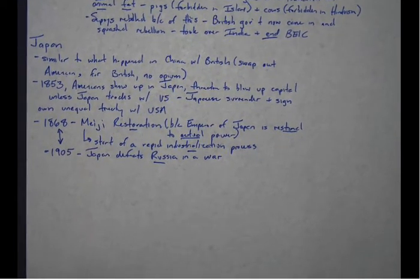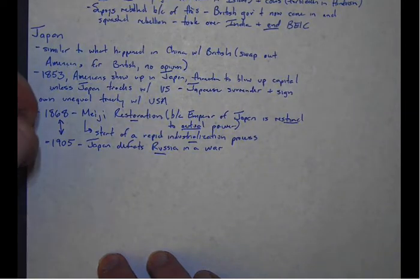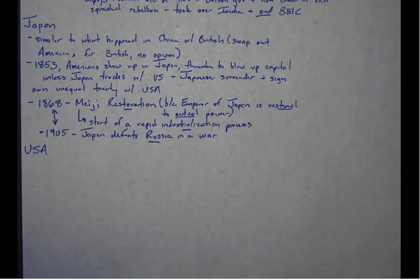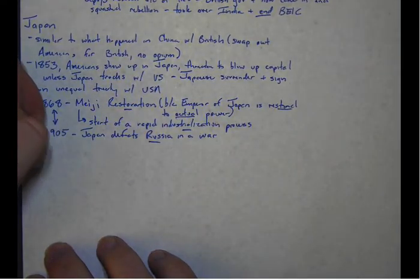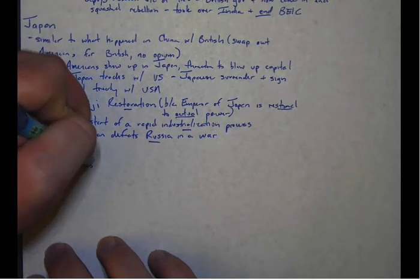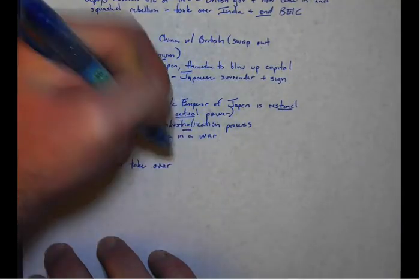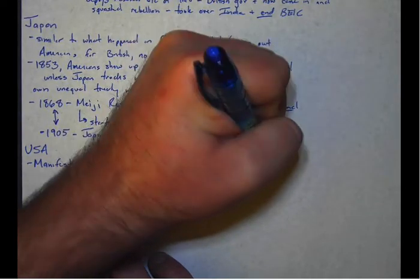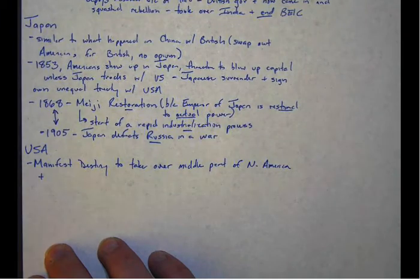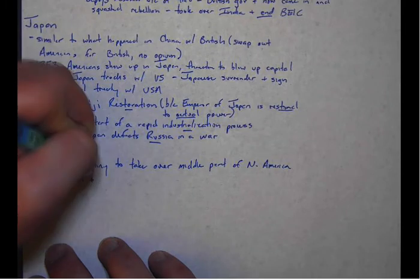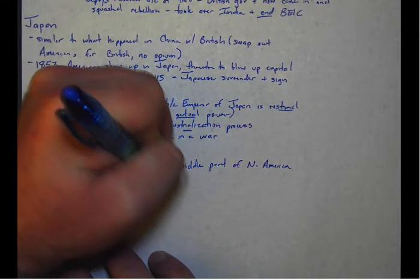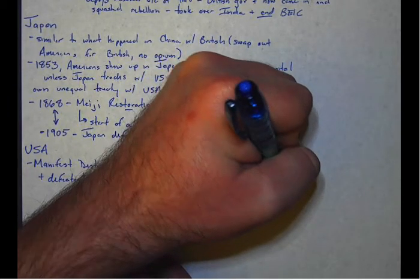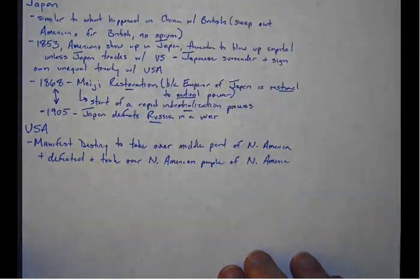All right. The last place that we want to take a look at in this video is the United States, the good old U.S. of A. So the last time we talked about the United States, they had used their manifest destiny to take over the middle part of North America. And in doing so, defeated and took over the Native American people of North America.